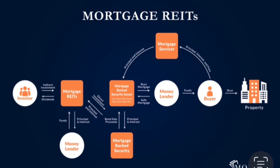Principal and interest goes to the mortgage servicer, which then sends principal and interest toward the mortgage-backed security issuers, and then back to the mortgage REITs. From there, the funds are distributed into dividends, allowing investors to receive those dividends. It's a little more complex because you're taking out a loan in order to buy the real estate property — that's the whole process of mortgage REITs, from the investor to the buyer and back to the investor as dividends.